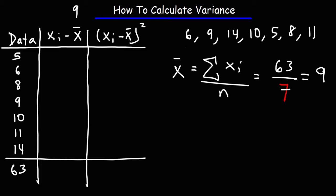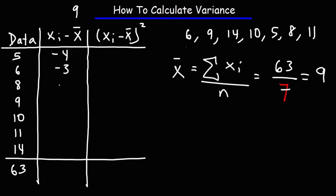So what we're going to do is subtract each data point by 9. So 5 minus 9 is going to be negative 4. 6 minus 9 is negative 3. 8 minus 9 is negative 1. 9 minus 9 is 0. 10 minus 9 is 1. 11 minus 9 is 2. 14 minus 9 is 5.